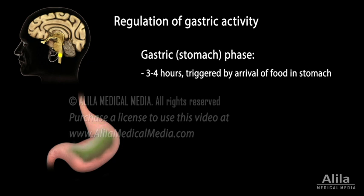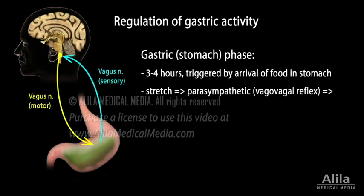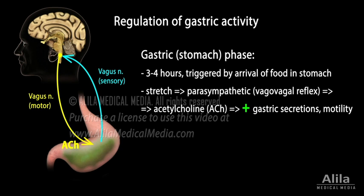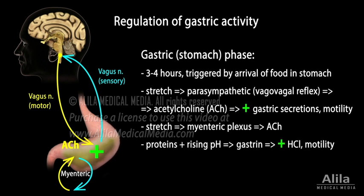The gastric phase is triggered by the arrival of food in the stomach. As the stomach fills, stretch receptors in the stomach wall activate the parasympathetic system to release acetylcholine, which stimulates gastric secretions and motility. There is also a local reflex mediated via the myenteric plexus. At the same time, partially digested proteins and the rising pH stimulate the release of gastrin, which increases gastric acid production and stimulates gastric motility. A negative feedback loop exists to wind down this phase as the stomach is emptying.